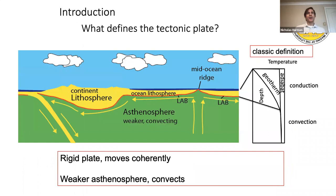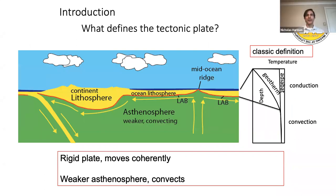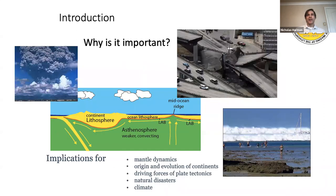Plate tectonics has been with us for over 50 years now, and we're still grappling with what actually defines the tectonic plate. Classically it's a rheological definition: we have a rigid plate that moves coherently over a weaker asthenosphere. The weaker asthenosphere is the convecting part, and we typically think of the plate as being the conductively cooling part. Understanding what defines that plate in detail has actually eluded us for decades.